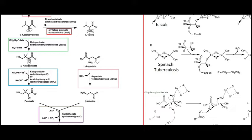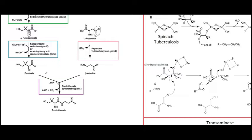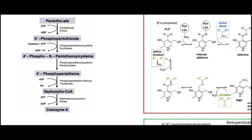In this other part of the pathway, we take L-aspartate and decarboxylate it, removing a carbon as CO2, which turns it into beta-alanine. Then we take both the pantoate and the beta-alanine and using ATP we combine them into pantothenate, which is vitamin B5.